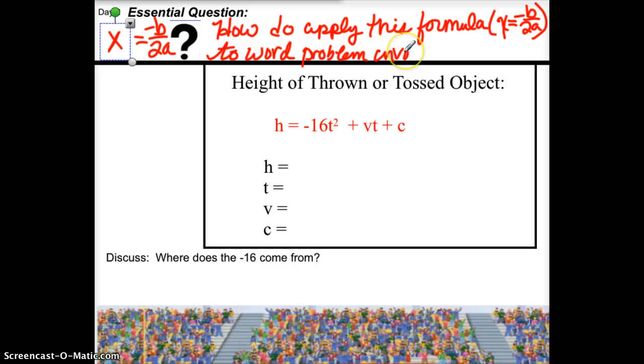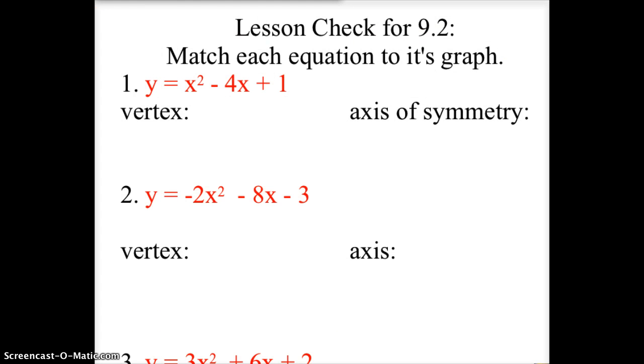How do I apply this formula to a word problem involving - and what we kind of call it is projectile motion - but it's where something's being thrown or tossed, a problem involving a thrown object. What I'd first like to do though, is have you page ahead and make sure we can successfully find our axis of symmetry and our vertex on a non-word problem.